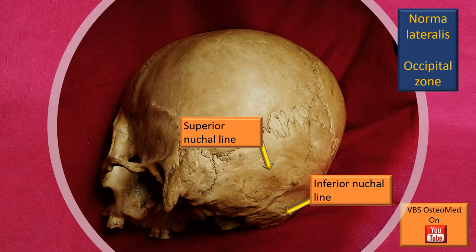On either side of the external occipital protuberance is a thick ridge of bone called the superior nuchal line. Lower down, about an inch below — roughly midway between the external occipital protuberance and the posterior margin of the foramen magnum — there is another horizontal ridge called the inferior nuchal line.